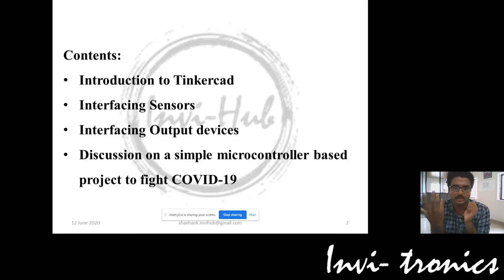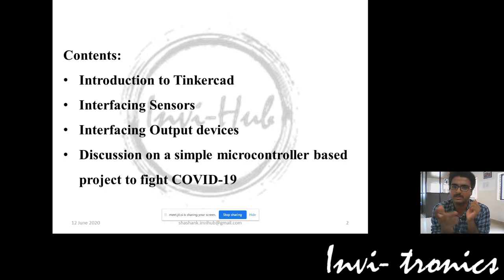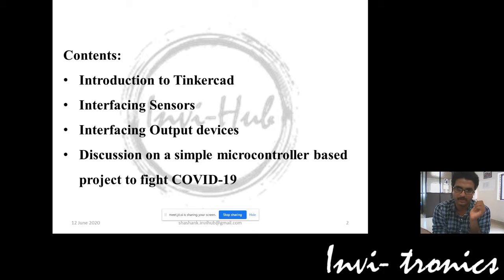Whenever we take an embedded system, in that embedded system we'll have input devices, we'll have a processing unit, and we'll have output devices. Input devices are the sensors — these sensors will give you the information from the environment, and then that information will be processed in the processor. We can use a microcontroller or any processor like Raspberry Pi, and then we are going to control some output devices.